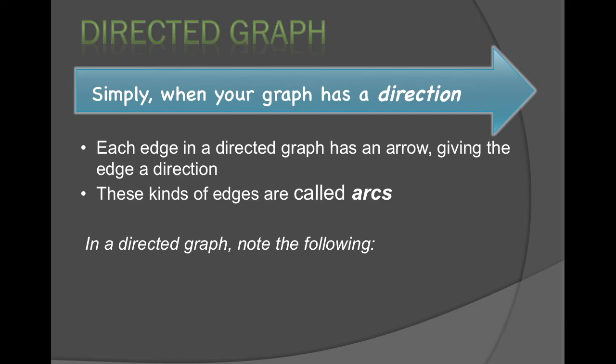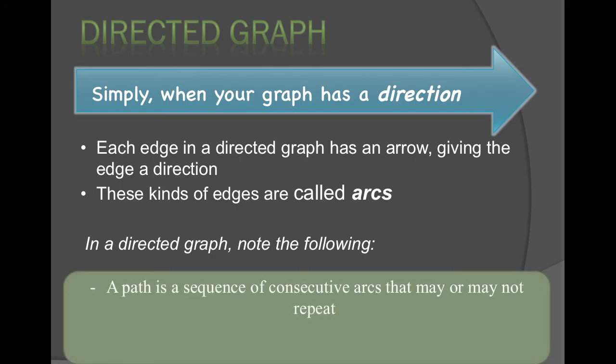In a directed graph, note the following. A path is a sequence of consecutive arcs that may or may not repeat, starting and ending at a different point. A circuit is a path that begins and ends at the same vertex.